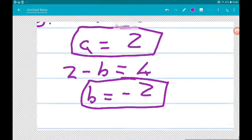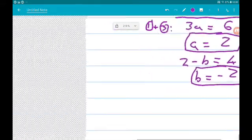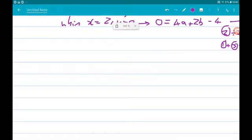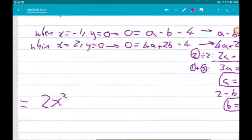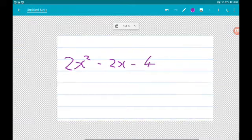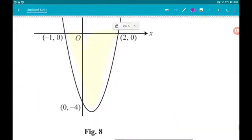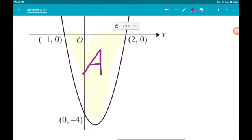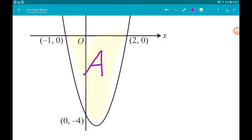So, at this point, we now know our quadratic is y equals 2x squared minus 2x minus 4. So, if we call this area A, A then is the integral of our quadratic between these two limits.